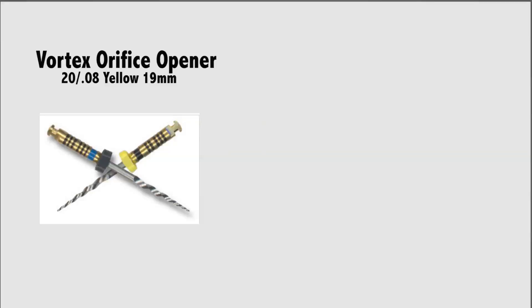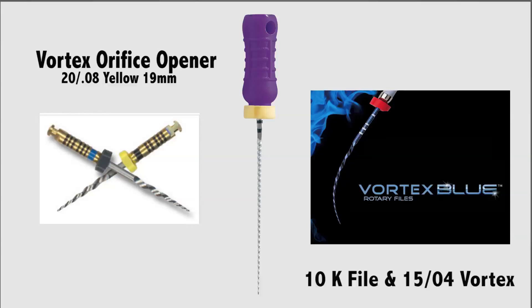Following access into the chamber, the Dentin Triangle was removed with a 20-08 vortex orifice opener and the glide path was enhanced with a combination of 10 files and a 15-04 vortex blue rotary file.